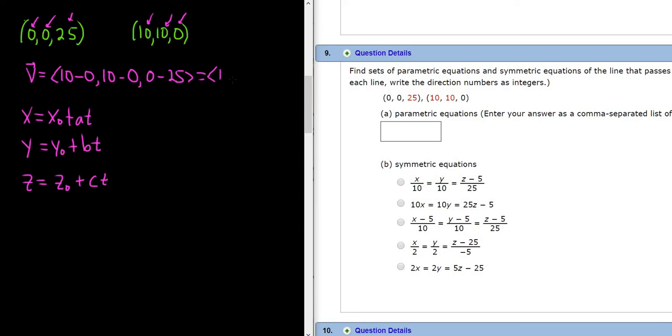This will be (10, 10, negative 25). So this is a vector that is parallel to our line. And the reason we can do this is because we have two points on a line. And so to find a vector on the line, you just connect the points and make a vector. And so to find this vector, you would just subtract the points.